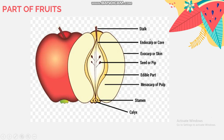The outer skin and the flesh of the fruit surround the seed. The fruit protects the seeds from the conditions of the external environment during the seed development. The colorful and fleshy part of the fruit helps the dispersal of seeds so that new plants can germinate and grow in a suitable environment.